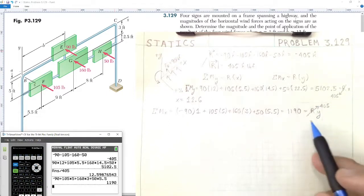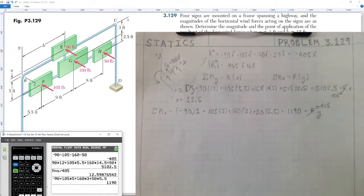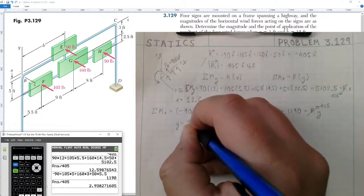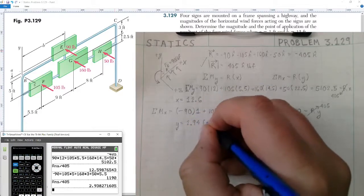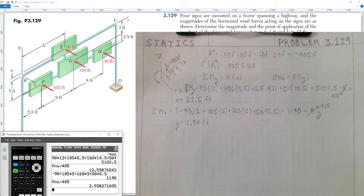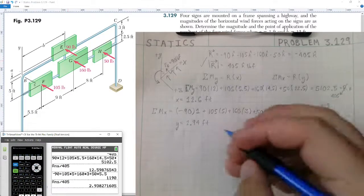We know this is equal to our resultant multiplied by its Y coordinate. We know this is 405. We can divide both sides by 405, and we get a Y value equal to 2.94 feet. And because the majority of the forces are below the horizontal axis along X, the force resultant will be applied at 2.94 feet below BC, below the X axis.